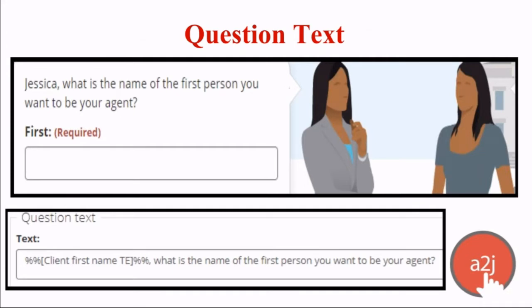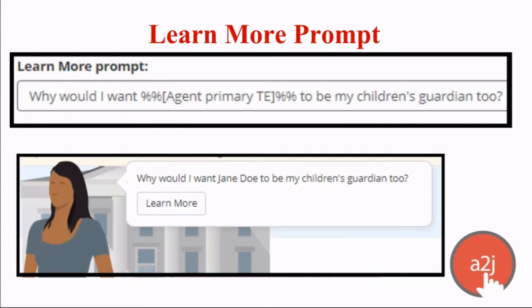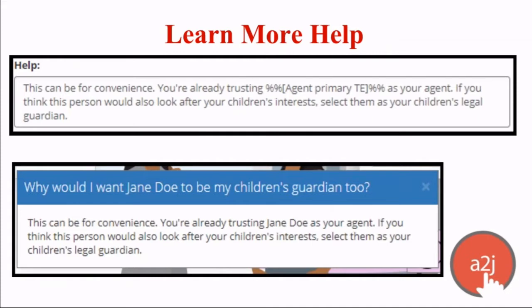The most common use is calling out the end user's first name or full name in question text. For the learn more prompt, here's an example: on the author side you'd write 'Why would I want %%[AgentPrimaryTE]%%' and finish the sentence. The bottom screenshot shows how it displays to the end user — if they named their agent Jane Doe, it shows 'Why would I want Jane Doe.' The same applies to the learn more help section, showing author view on top and end-user view on bottom, assuming Jane Doe is the name given for Agent Primary TE.